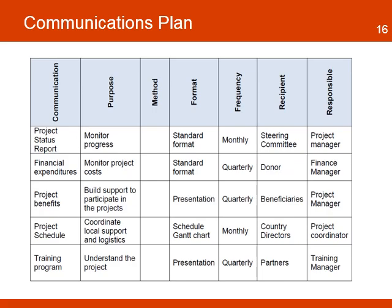The communication plan will include a simple matrix for different types of communications. The first column identifies the type of communication. The next, the purpose of the communication. The next column is the methods for delivering the communication. The next is the format and the frequency of the communication. The next column identifies the recipient of the communication, and the last column identifies the person responsible for preparing and sending the communication.